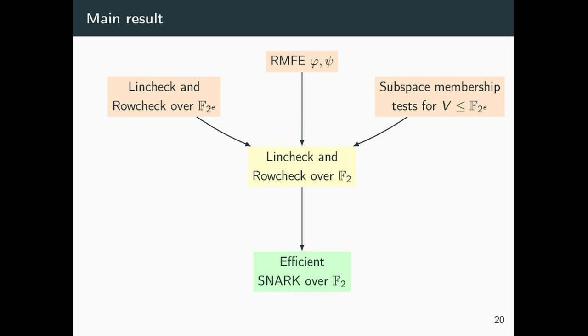Combining these three tools together gave us a Lincheck and a Rowcheck over F2, which can be used to prove the satisfiability of Boolean Rank-1 constraint systems. This in turn gives us an efficient SNARK over F2.